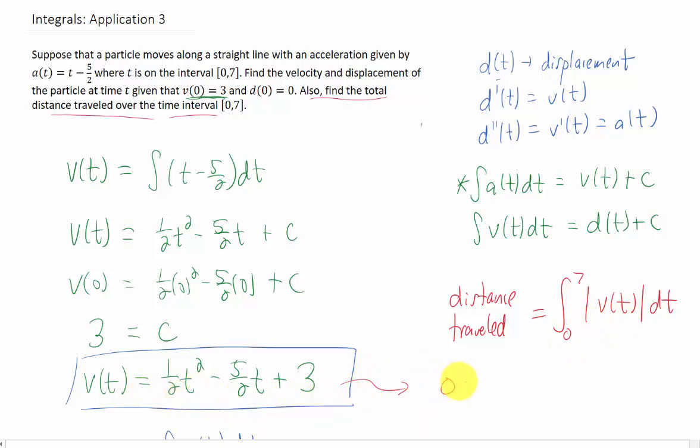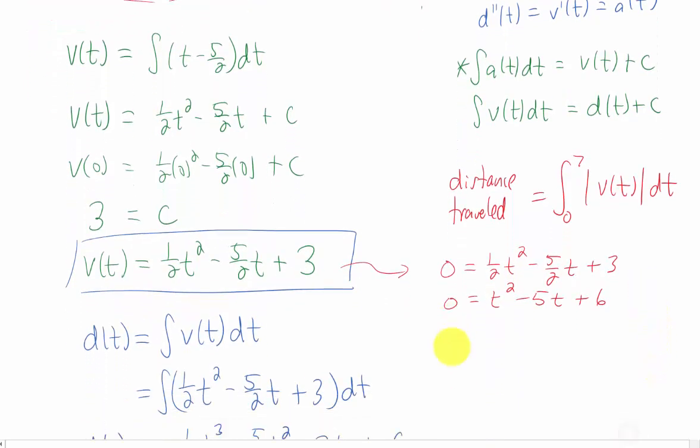That's going to require that we find the zeros of our velocity function. Where does the velocity function cross the x-axis, in other words? Okay, so we can set our function equal to 0. It would probably be convenient for us to multiply both sides of this equation by 2. And we need to factor our function. Hopefully your problem will factor as well.